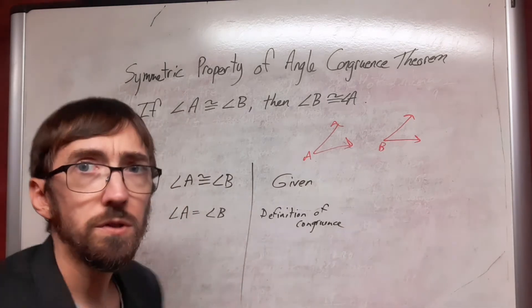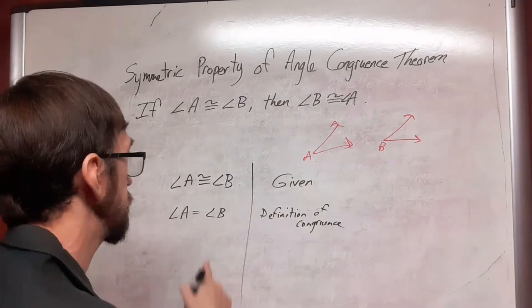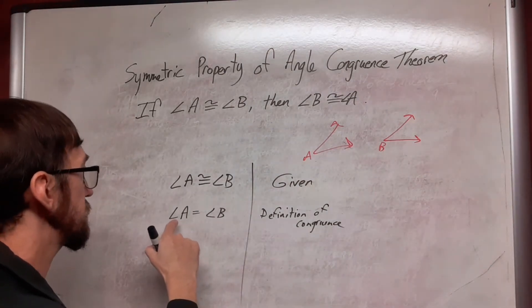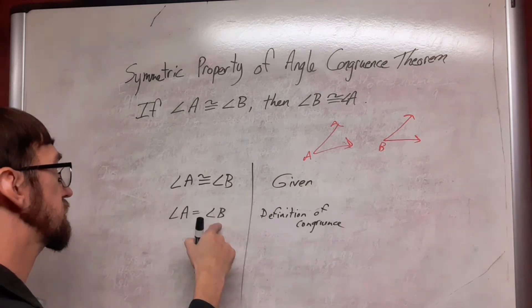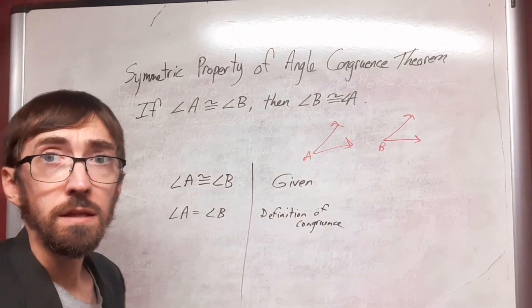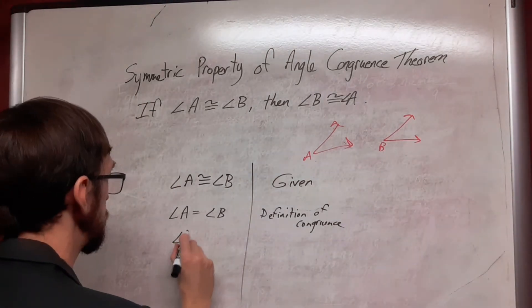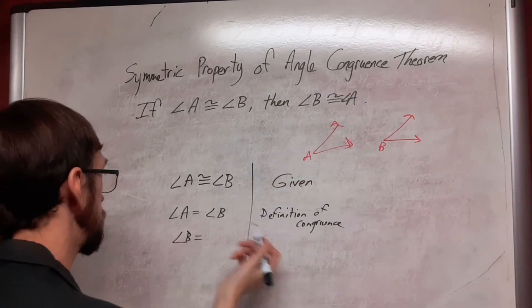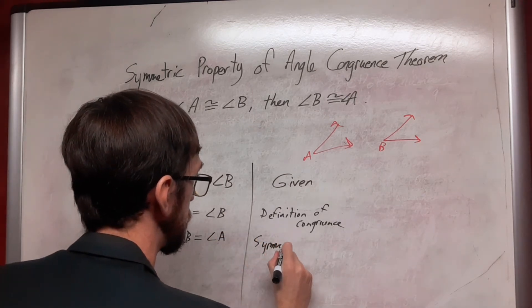And now that we have an equality statement, we can bring in a technique from algebra. And we should know from algebra that if we have a statement where something equals something else, we can reverse that and say that that second thing equals the first thing. That's the symmetric property of equality. So we can say that angle B is equal to angle A, by the symmetric property of equality.